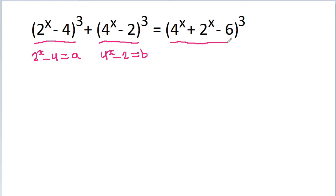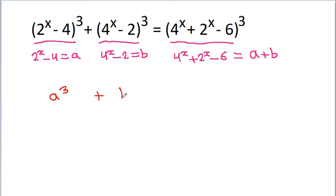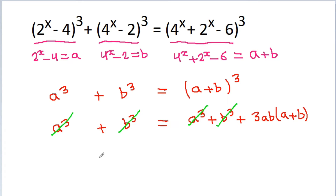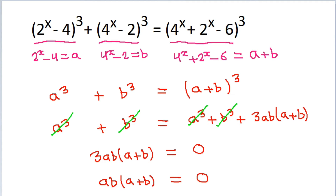Then 4 to the power x plus 2 to the power x minus 6 will be a plus b. So we get a cube plus b cube is equal to a plus b whole cube. Now a cube plus b cube and a plus b whole cube expands to a cube plus b cube plus 3ab times a plus b. The a cube and b cube terms cancel, and we get 3ab times a plus b is equal to 0, or ab times a plus b is equal to 0.